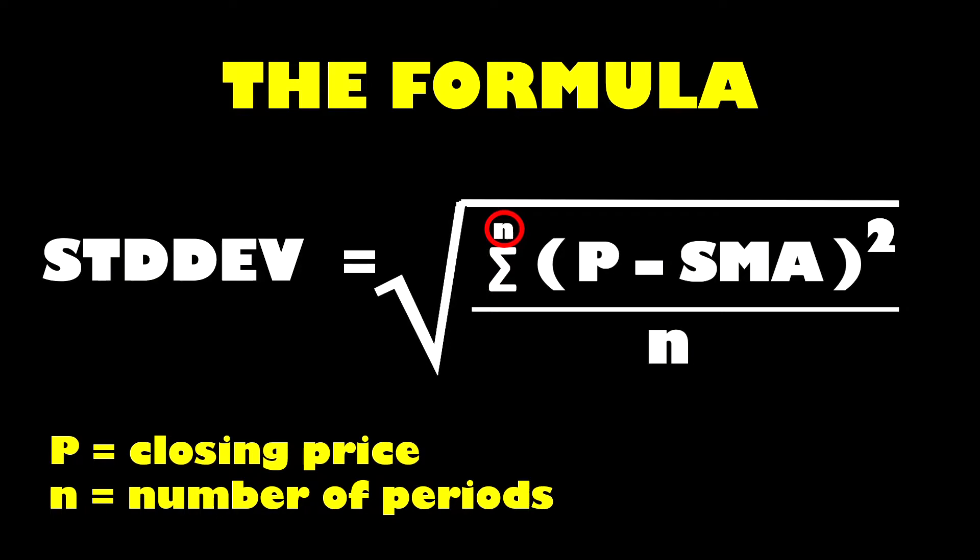Hence why we need that sigma symbol to total all the individual calculations. It saves writing them out one by one which would look quite convoluted. But it means that if we are using the default input of periods for the standard deviation indicator, which is 14, we'll be doing the formula that's on the top half of the division for each of the 14 periods.